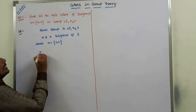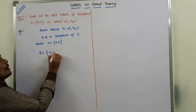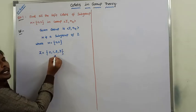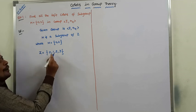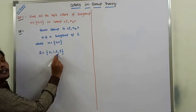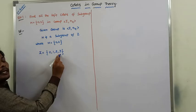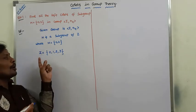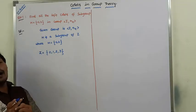Z contains 4 elements: 0, 1, 2, 3. We already know that 0 mod 4 = 0, 1 mod 4 = 1, 2 mod 4 = 2, 3 mod 4 = 3, and 4 mod 4 = 0. So the elements of Z are the set {0, 1, 2, 3}.